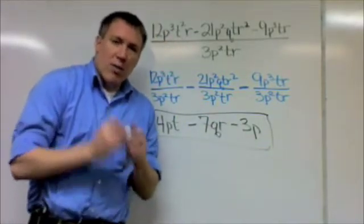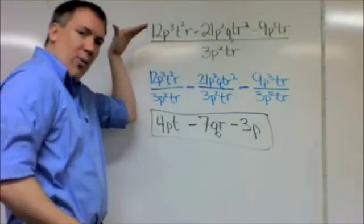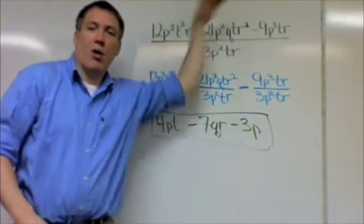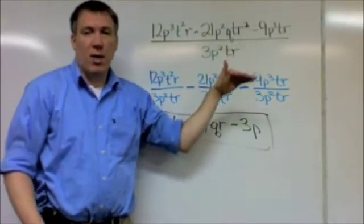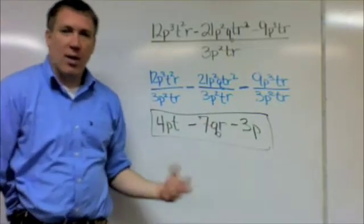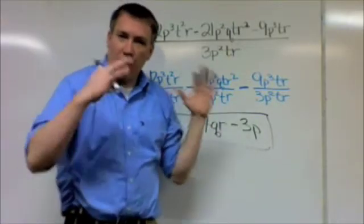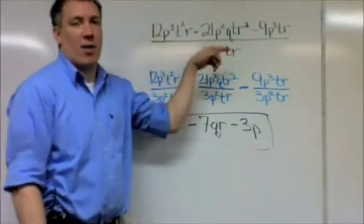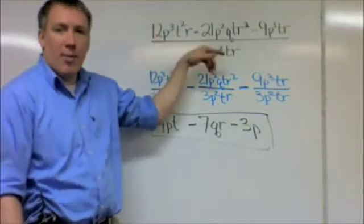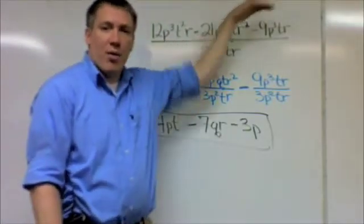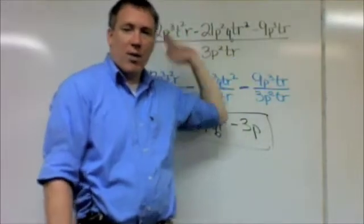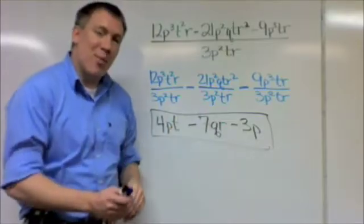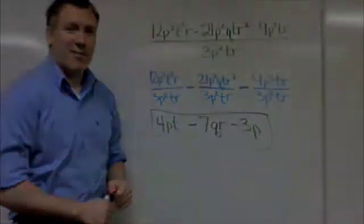Again, when you divide something with multiple terms on the top and one term on the bottom, so a polynomial divided by a monomial, you use the distributive property like you would with parentheses and something being multiplied. The same principle, except for now you're dividing everything from the bottom. So divide the first one by the bottom, the second one by the bottom, third one by the bottom. No matter how many terms you have, you're going to divide each one individually by this bottom piece. It's basically the distributive property for division.